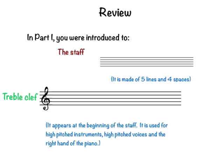In Part 1, you were introduced to the staff. This is the staff. It is made of five lines and four spaces. This is the treble clef. It appears at the beginning of the staff. It is used for high-pitched instruments, high-pitched voices, and the right hand of the piano.